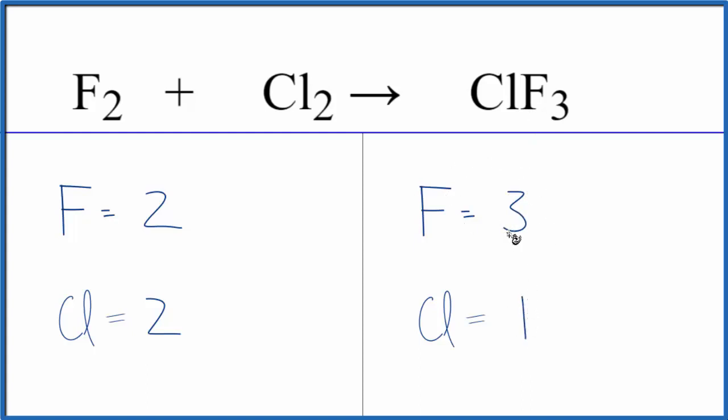Often when we have this odd number, it's helpful to get this to an even number. It makes the balancing a lot easier. So, if we put a two as our coefficient, this two, it'll apply to the whole molecule.